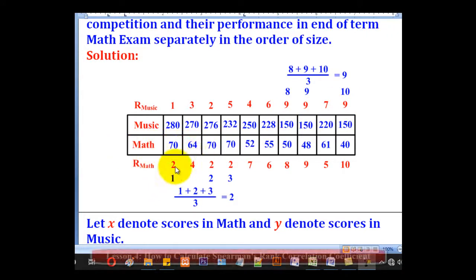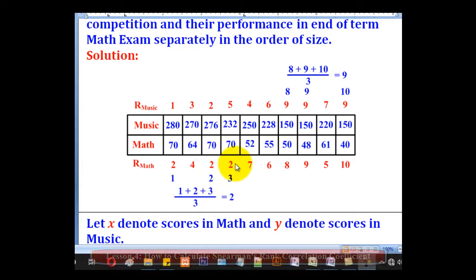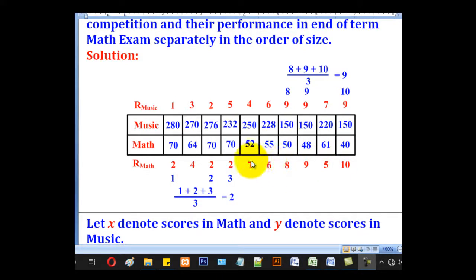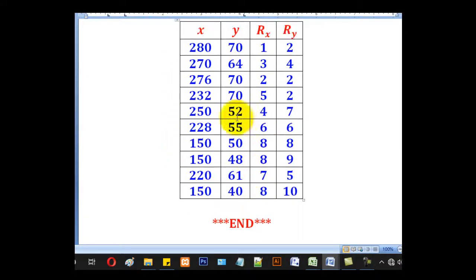For math, the first, second, and third positions all share the same mark of 70, so we get their average: positions 1, 2, 3 averaged give rank 2. All three candidates get rank 2. Since 3 positions have been taken, the next is rank 4, then 5, 6, 7, 8, 9, and 10 follow in order. If X denotes math and Y denotes music, we can produce a completed table.